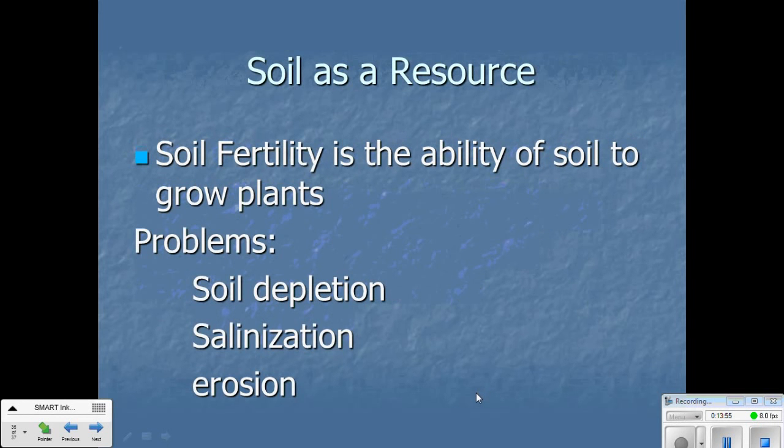Soil as a resource. Soil fertility is the ability of soil to grow plants. Problems with using soil as a resource is that the soil can get depleted. If you've ever heard about crop rotation, you can't grow things like beans in one place year after year because those beans are going to pull out certain nutrients from the soil and then it'll get depleted of those certain nutrients. Salinization is when you get too much salt in the soil and then you can't use it to grow anything anymore. And then erosion just means the breakdown and transportation of soil.